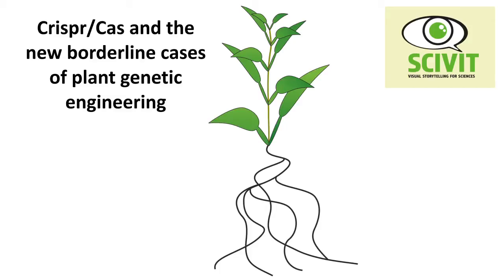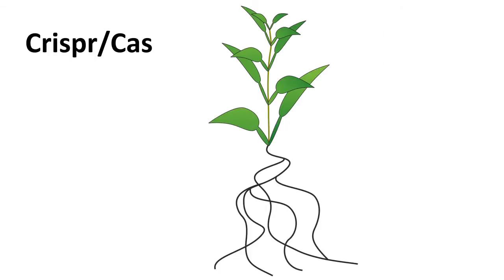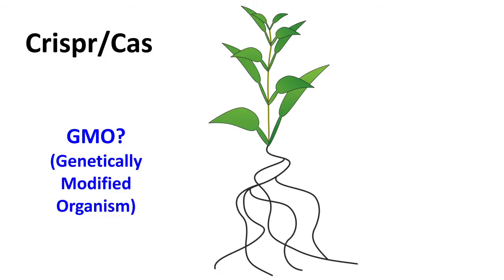CRISPR-Cas and the new borderline cases of plant genetic engineering. CRISPR-Cas is a new approach in genetic engineering. But can it produce plants not genetically modified as well?